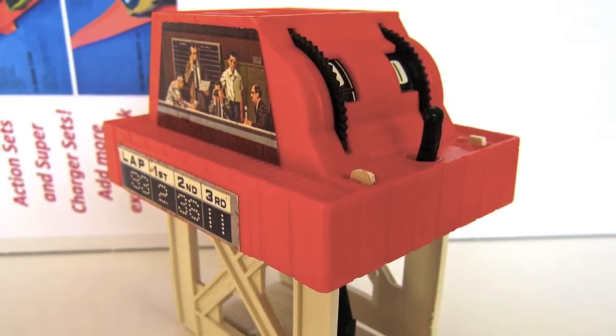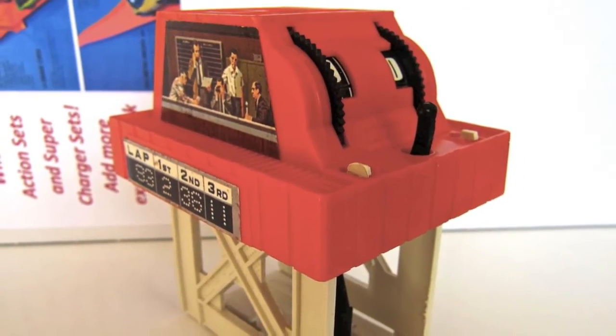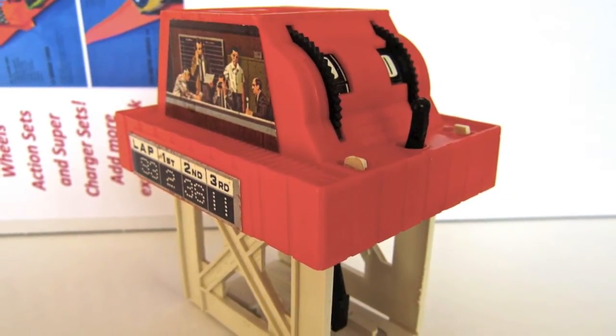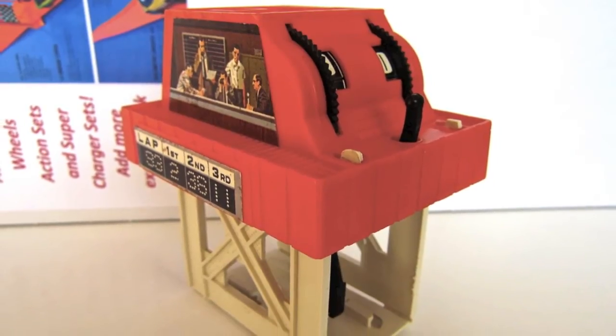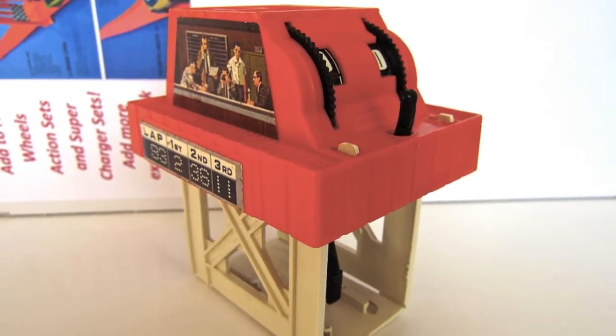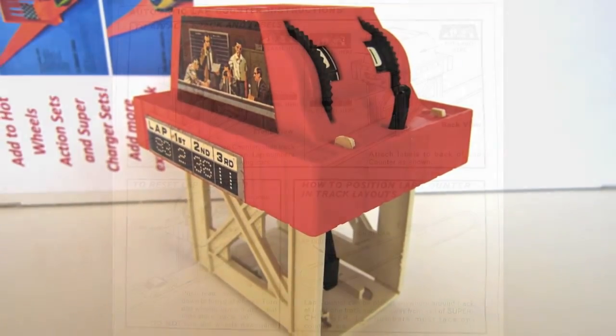This is a 1969 Hot Wheels automatic lap counter. It's a cool device reminiscent of a control tower at a racetrack where laps and stats are recorded during an event.